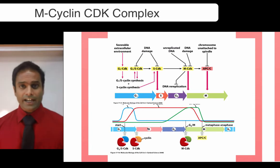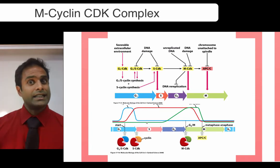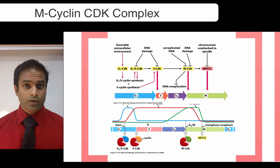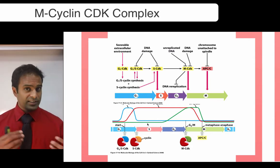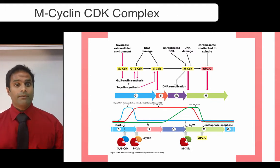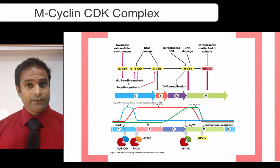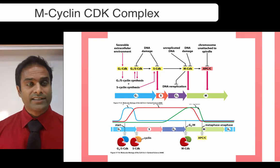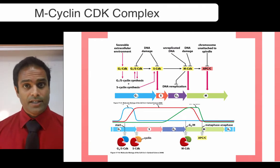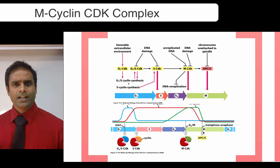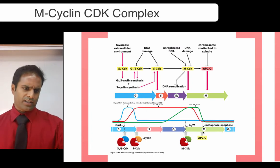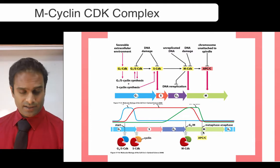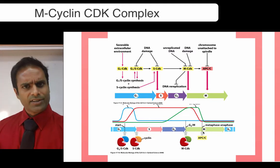Interestingly, during G1 and S, E2F — which drives G1 and S forward — will sit on the promoter of the m cyclin gene and inhibit it. So the very thing that promotes the cell cycle in the beginning will actually inhibit mitosis. Once m cyclin is active up through metaphase, the cell will arrest in metaphase until the mitosis promoting factor has been destroyed. E2F drives the cell cycle forward but inhibits MPF, while MPF drives the cell into mitosis but then arrests it there.